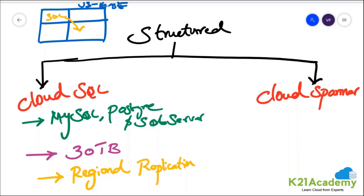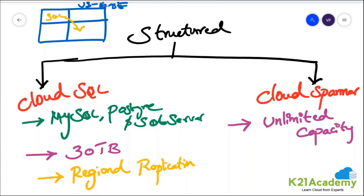Now let's see what Cloud Spanner is and what its capabilities are. The first important point about Cloud Spanner is that it has unlimited capacity. Cloud Spanner has unlimited capacity — that's an amazing option — whereas Cloud SQL is limited to 30 terabytes.